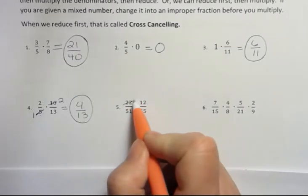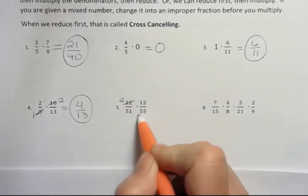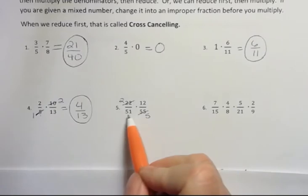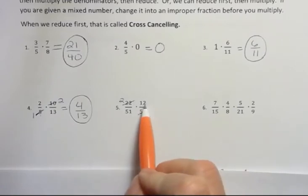11 goes into 22 twice, and it goes into 55 five times. Now, you also might not see that 12 and 51 have a common factor, but they do. Because if I add 1 and 2 together, I get 3. So 3 goes into 12.